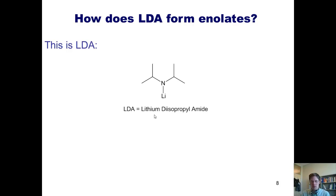LDA is a useful base for removing alpha hydrogens to form enolates. How does it do this?